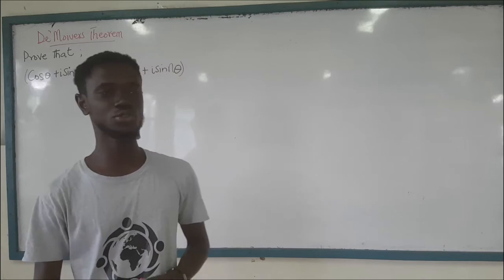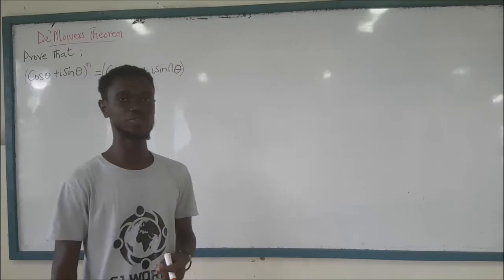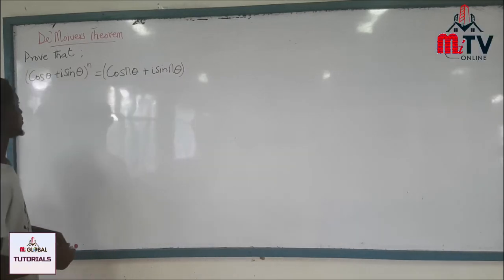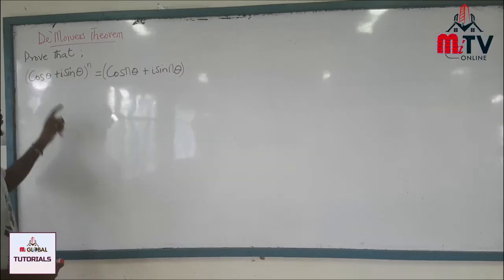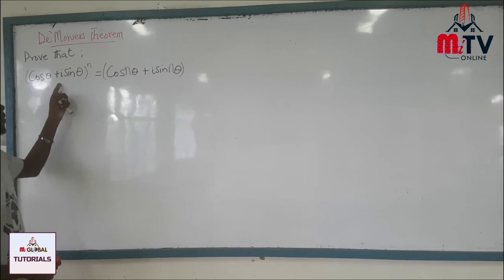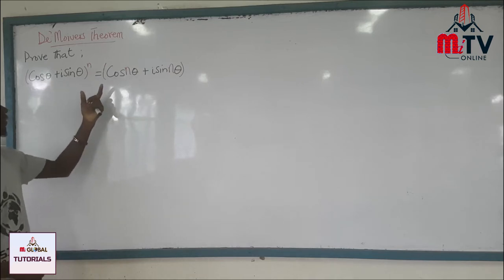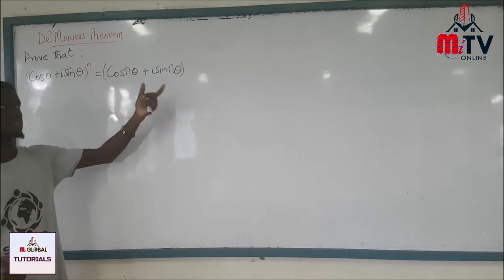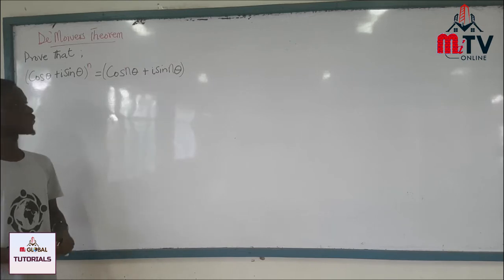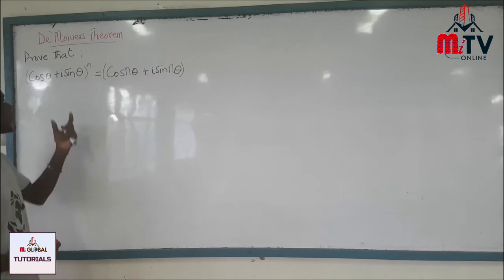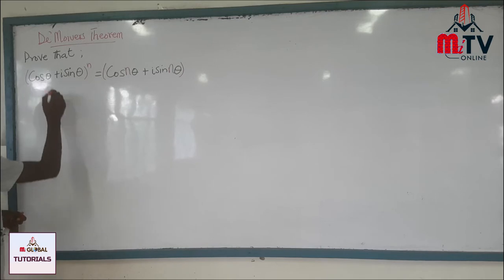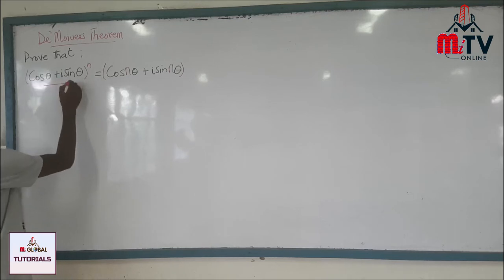Today, in today's tutorial, I am going to show you how to prove De Moivre's theorem. De Moivre's theorem is (cosθ + i sinθ)^n = cos nθ + i sin nθ. We are going to see how we call this equation — we call this the multiple angles form.